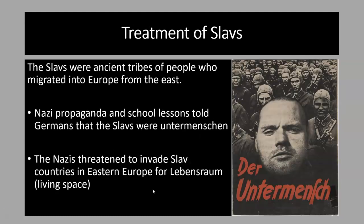Now we'll look at how the Nazis treated different minority groups within Germany, starting with the Slavs. The Slavs were ancient tribes who had originally migrated into Europe from the east. Their modern descendants are found across large areas of Eastern Europe, and by the 1930s quite a lot of people of Slavic origin lived in Germany. The first way they were persecuted was through propaganda and school lessons which constantly told Germans that the Slavs were subhuman. The Nazis insisted that the Slavs were of a different origin from Aryan Germans and needed to be treated differently.